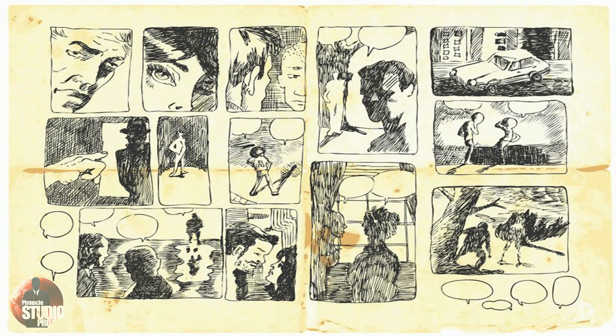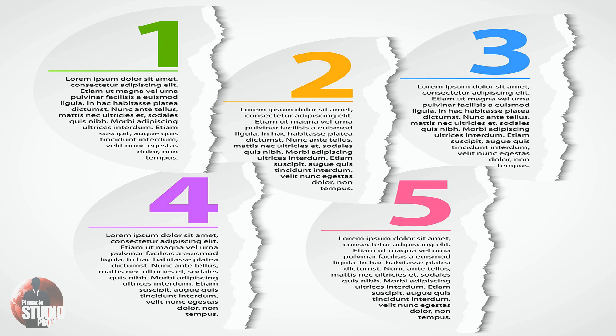Storyboards are used to construct a visual representation of how your story will play out in your video or film. It's basically pictures of shots that make up the scenes of your project. The shots are placed in order on the storyboard to tell the story of your film. Clear as mud yet?